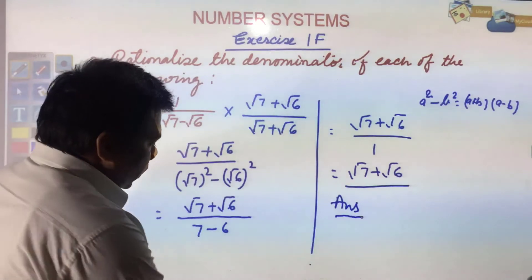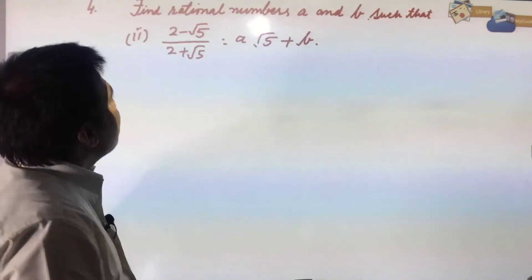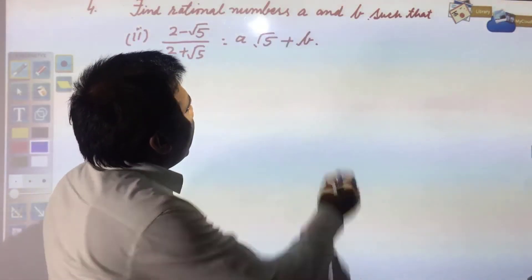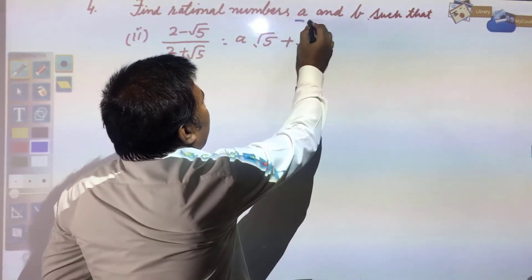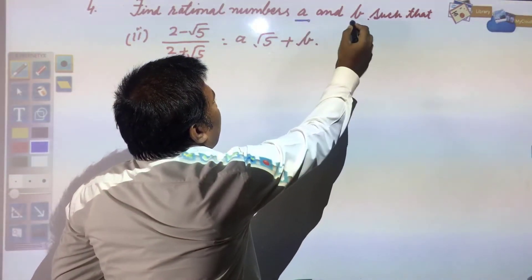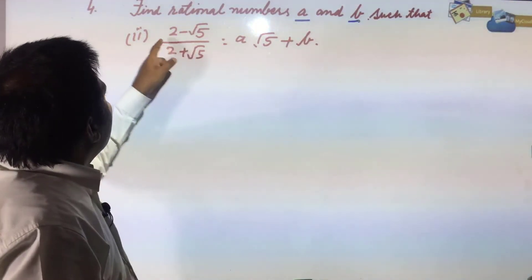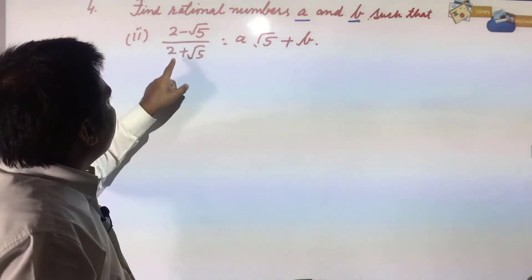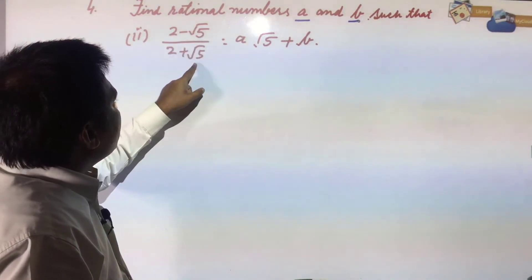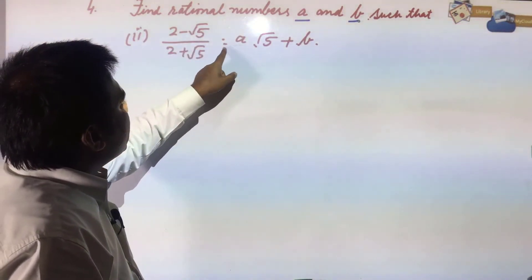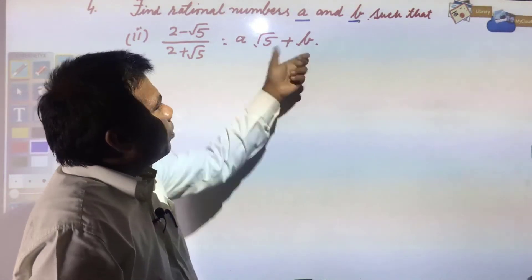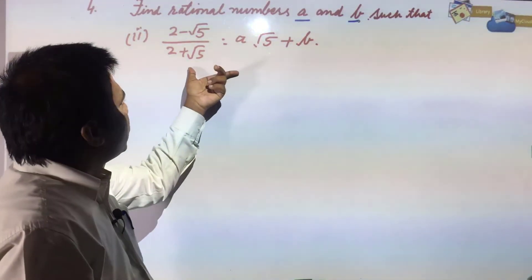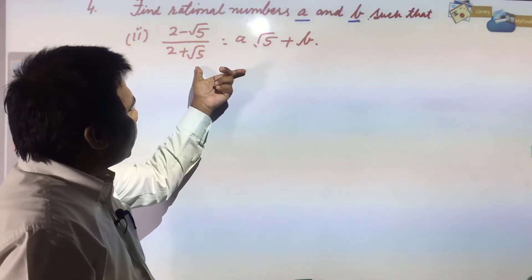Next question: find the rational numbers a and b such that (2 - √5)/(2 + √5) = a√5 + b. This type of question was already solved in the examples.